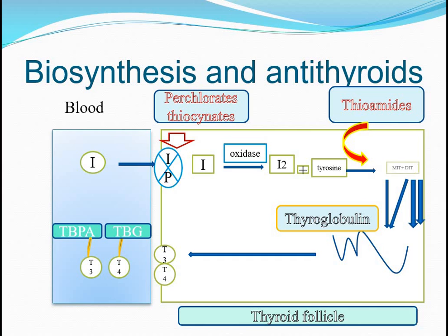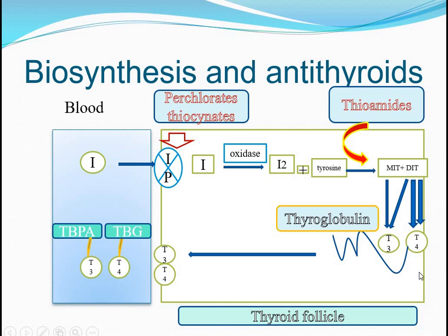Through condensation with tyrosines, it forms monoiodotyrosine (MIT) and diiodotyrosine (DIT). DIT contains two iodine molecules, and MIT contains one. When one MIT and one DIT combine — 1 plus 2 equals 3 — it synthesizes T3. When two DIT combine, it synthesizes T4. So T4 and T3 are synthesized and attached with thyroglobulin present inside the colloid.